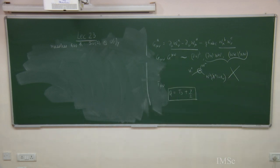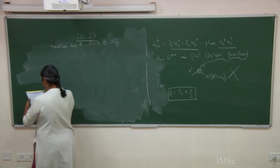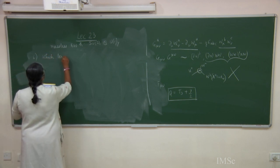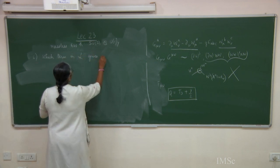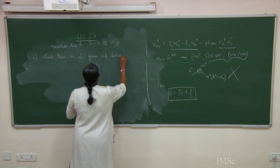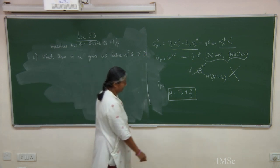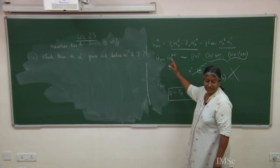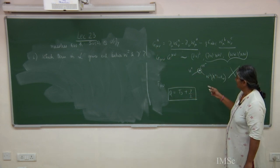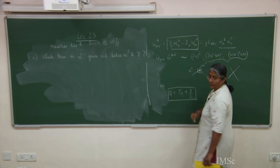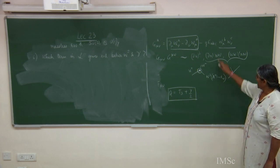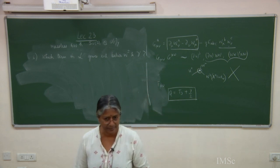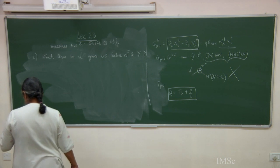Question 6: which term in the Lagrangian gives the interaction between W_plus, W_minus, and gamma? We have already answered this — it comes from the kinetic energy term. For non-Abelian theories, the kinetic energy term also contains interactions. The pure kinetic piece comes from Maxwell's equations, and the extra non-Abelian piece gives trilinear and quartic interactions of the gauge fields.